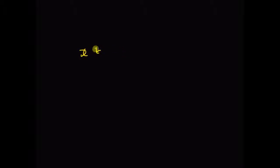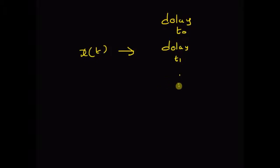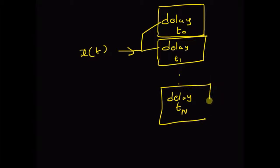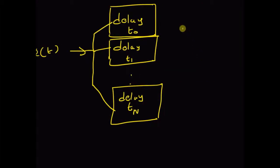In wireless communications, a multipath channel can be represented as follows. We have the input x(t) that goes through different channels, each with its own delay: delay t₀, then delay t₁, and so on up to delay tₙ. So each one of these is a channel. At the receiver, we see the combined effect of these multiple channels, each one having their own attenuation alpha.